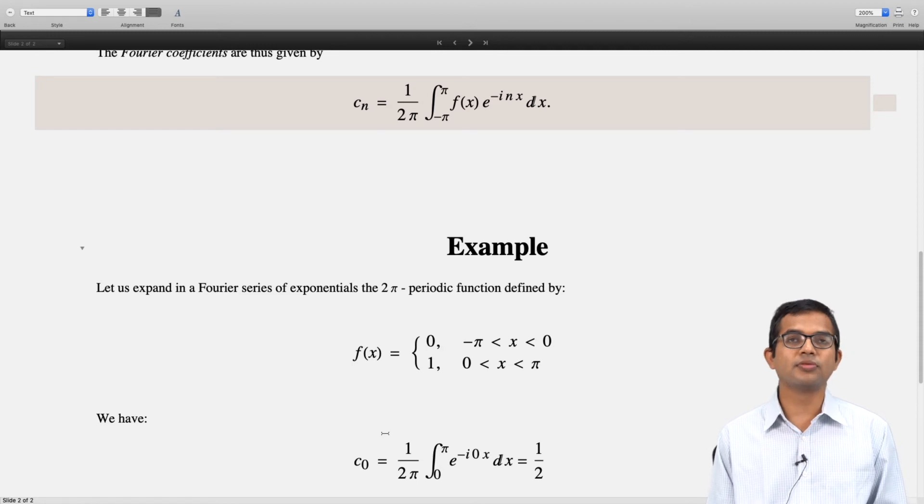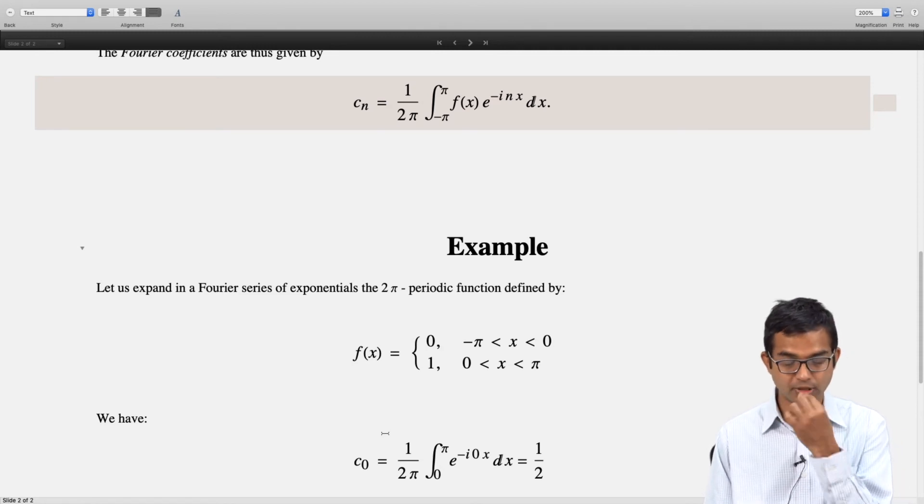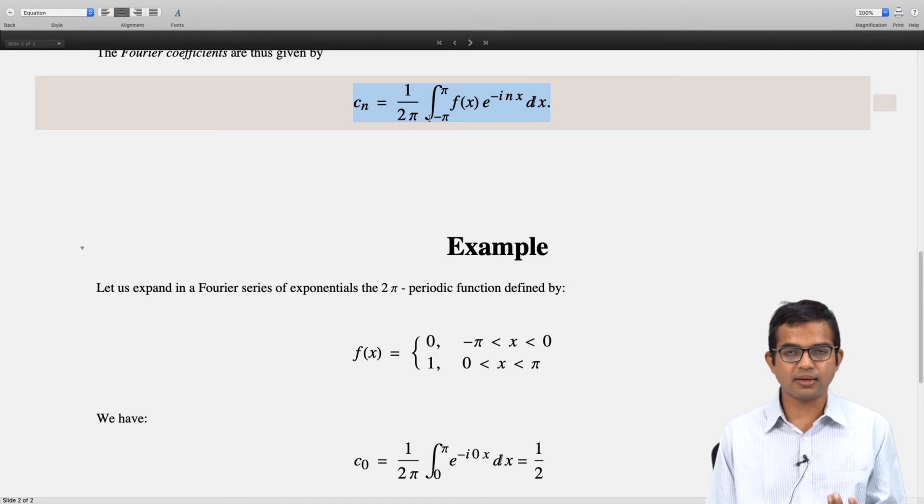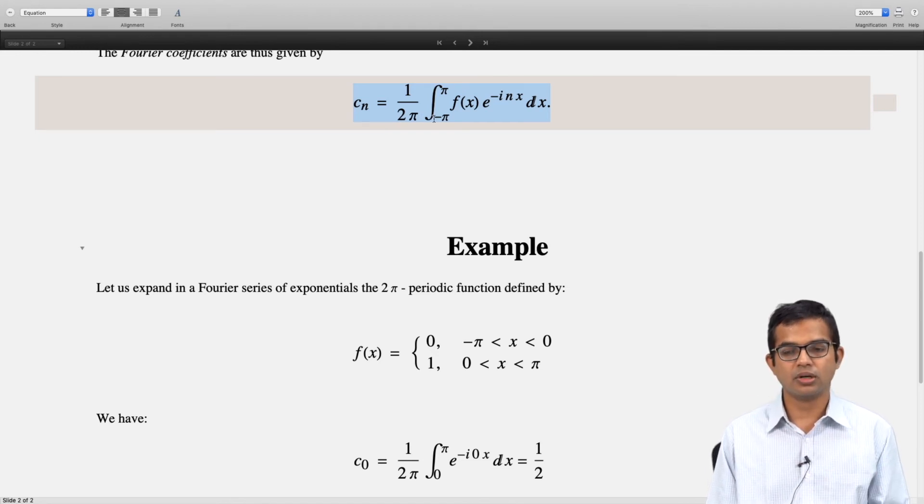We have to be careful with the c₀ term. The coefficient corresponding to the DC part usually needs to be treated separately. You cannot blindly use this formula and think you have the full answer. You always use some special caution to work out the DC coefficient c₀, although the formula is the same.